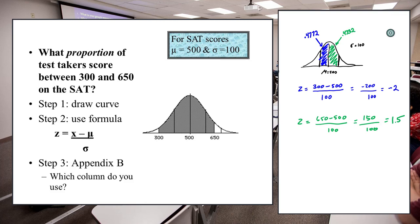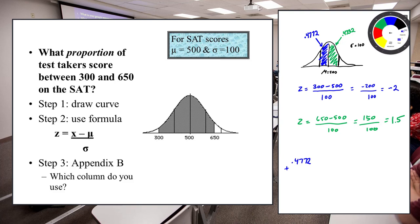The question asks for the proportion scoring between those two values, so we add them together: 0.4772 + 0.4332 = 0.9104. That is your solution. You can see that if you didn't draw this out, it would be really challenging. That's probably the number one mistake people make on these problems — skipping drawing out the normal curve and shading the regions they're interested in.